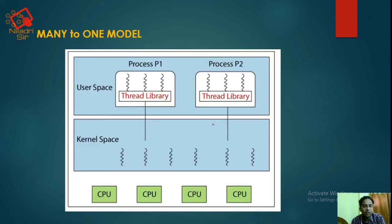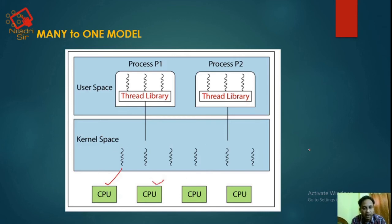In the pictorial representation of many-to-one model, there are four CPUs with kernel spaces. There are processes P1 and P2, each with their own thread libraries.